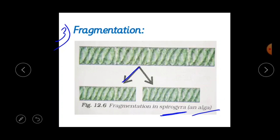Fragmentation is a very rapid and continuous process. Within a short period of time, the algae covers a large area of water. An example is spirogyra. This is about fragmentation.